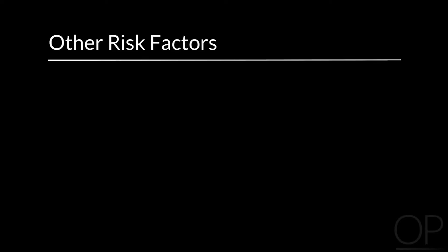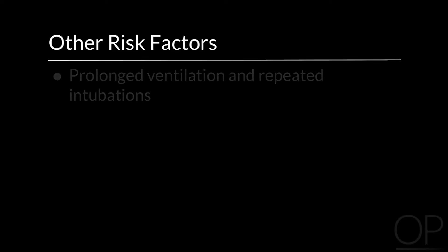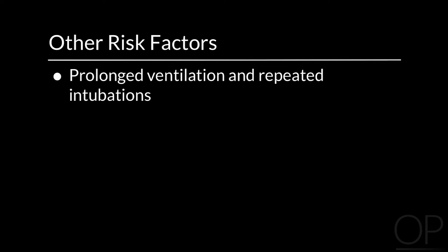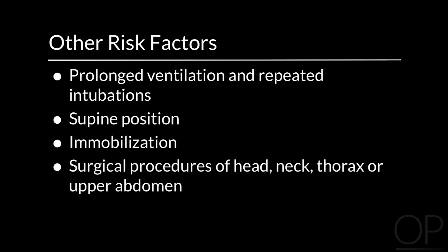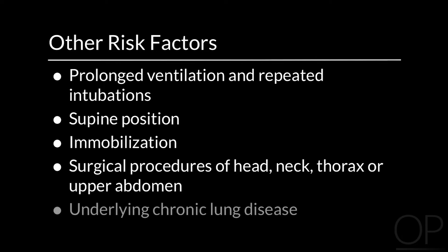Patients who are immunocompromised are more likely to have viral or fungal pneumonia than patients with intact immune systems. Other risk factors for the development of ventilator-associated pneumonia include prolonged ventilation and repeated intubations, supine position, immobilization, surgical procedures of the head, neck, thorax, or upper abdomen, and underlying chronic lung disease.